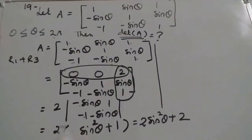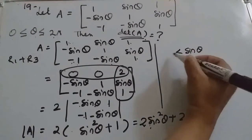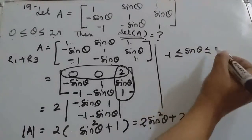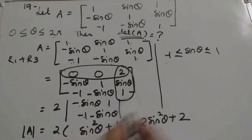Now determinant A, this is determinant A. Determinant A we got as 2 sin square theta plus 2. We know about the domain of the sin theta which is less than equal to minus 1. Sin theta values lies between minus 1 to 1.